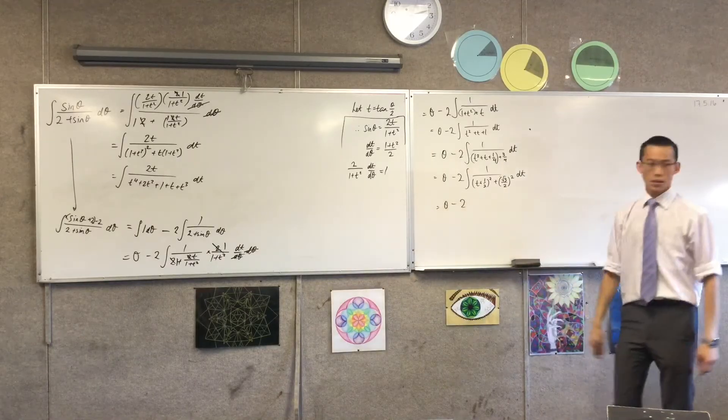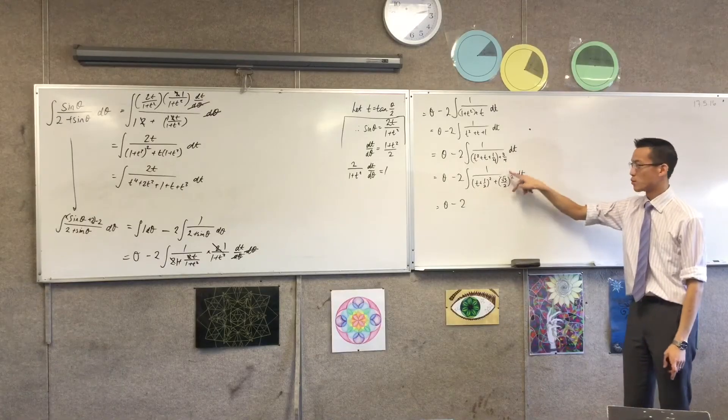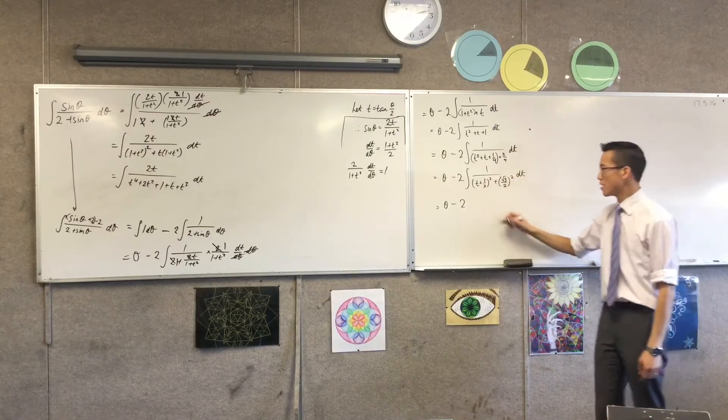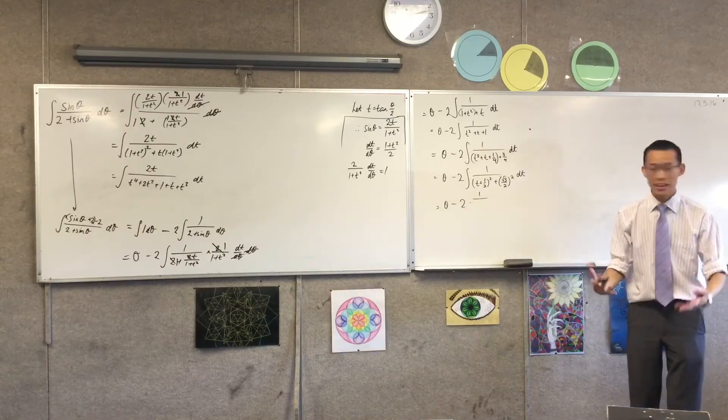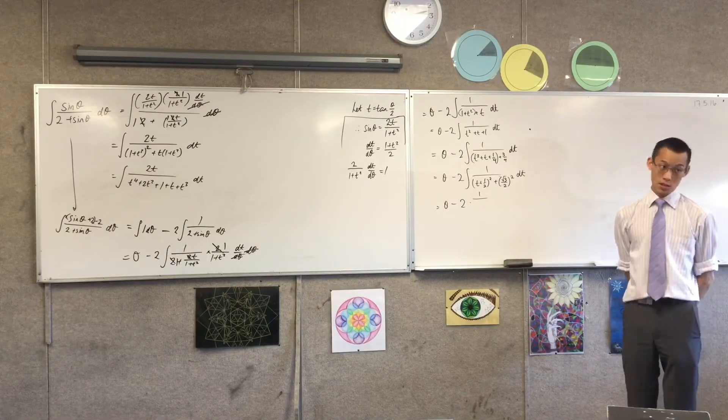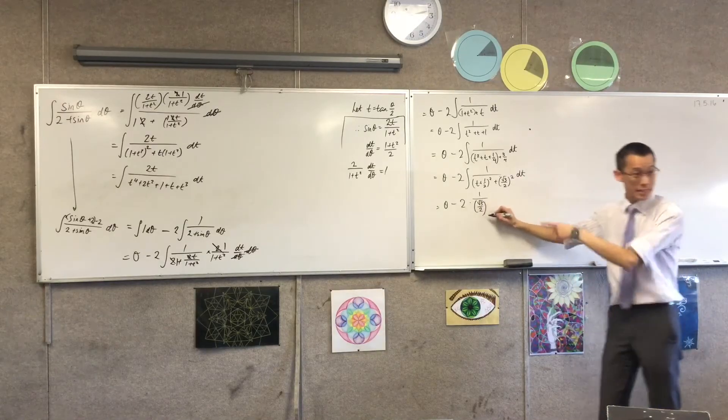This is theta minus two. This is something squared plus root three on two, all squared, right? So this is going to be one on a. Do you remember the one on a? Now, what's a in this case? It's root three on two. That's why I put it in the brackets and squared it. So this is one on a. There's a.